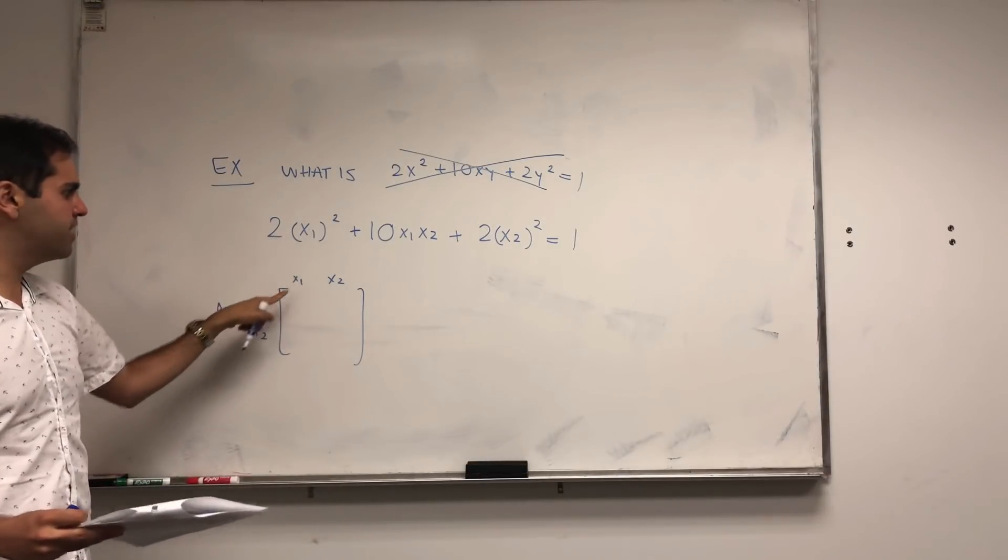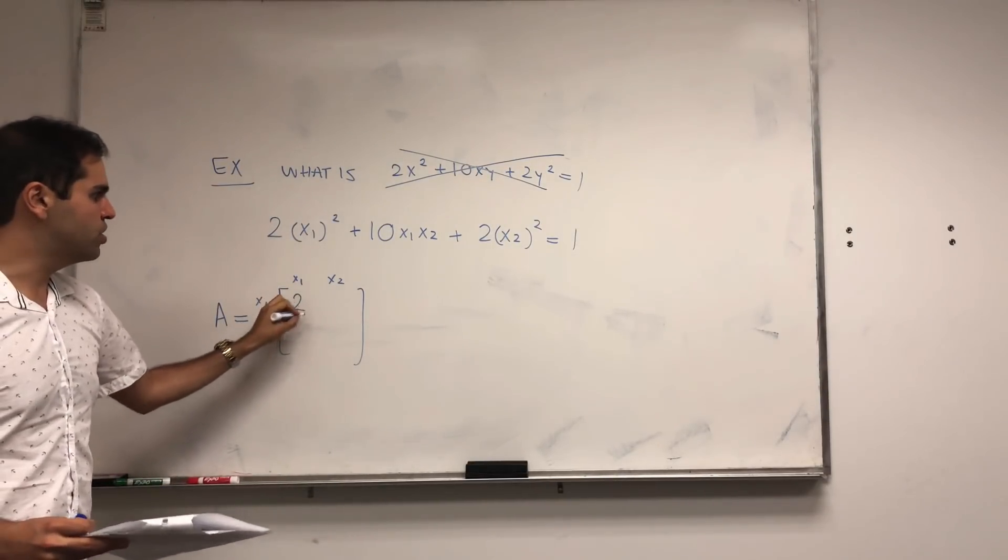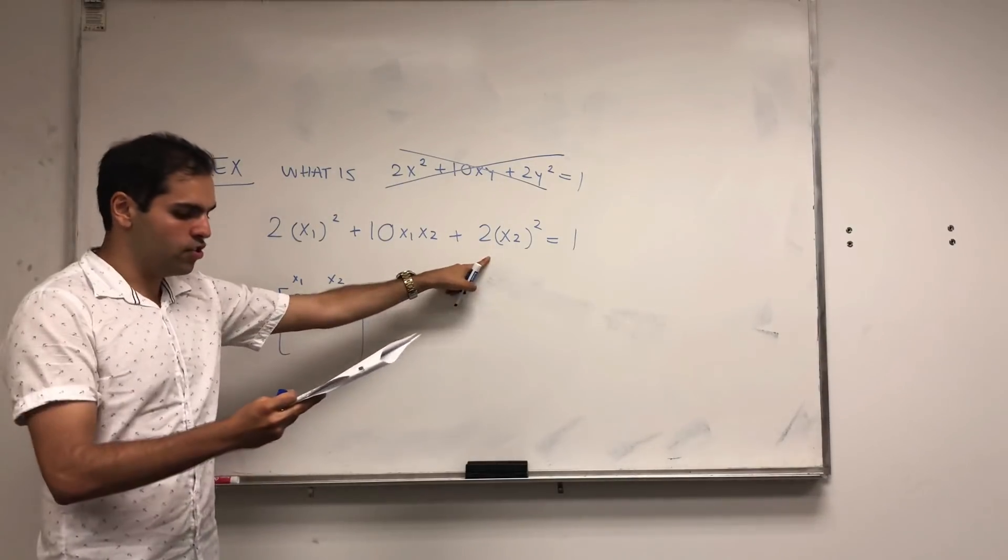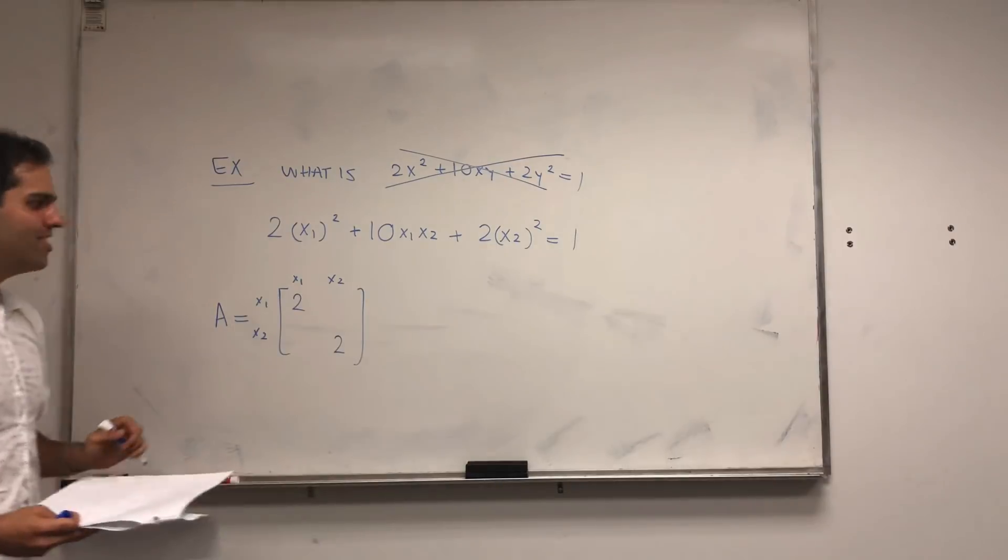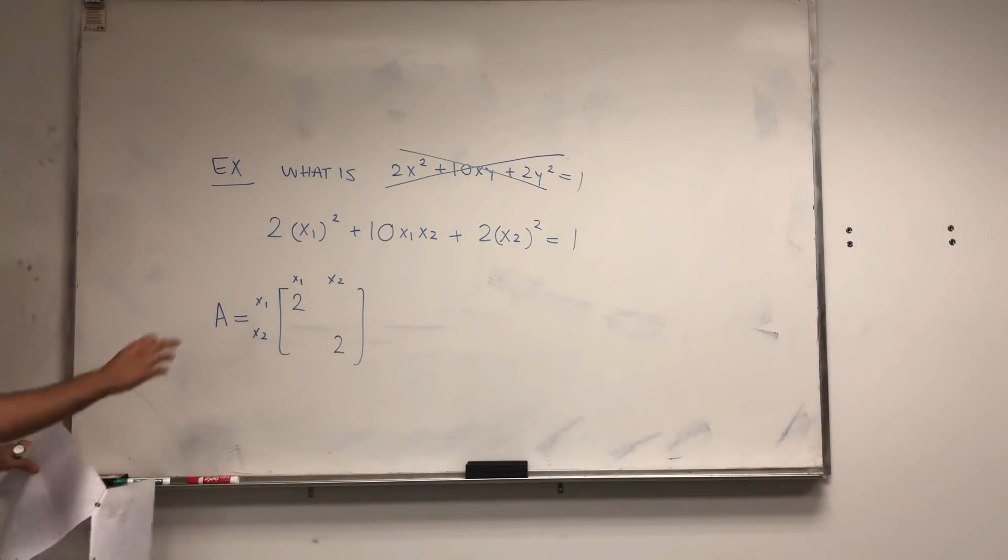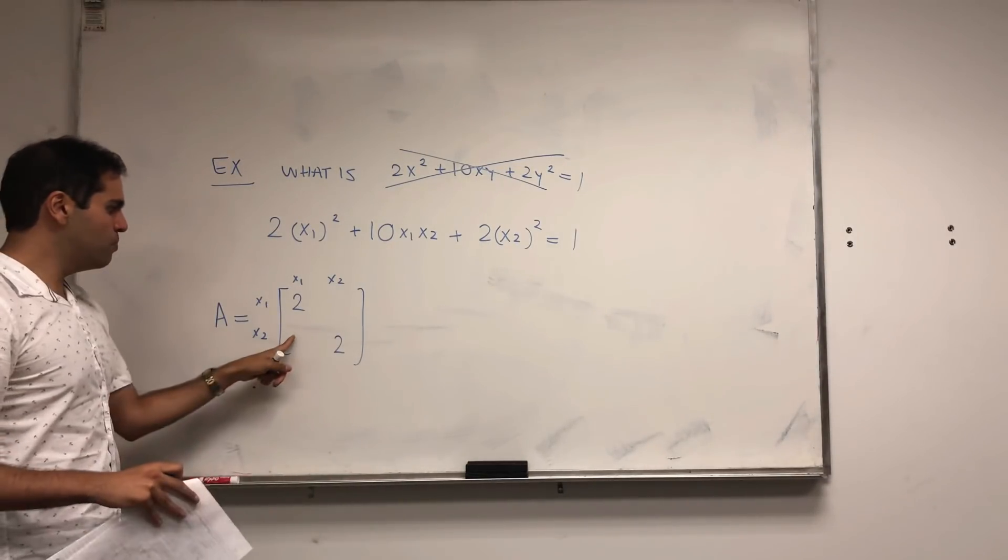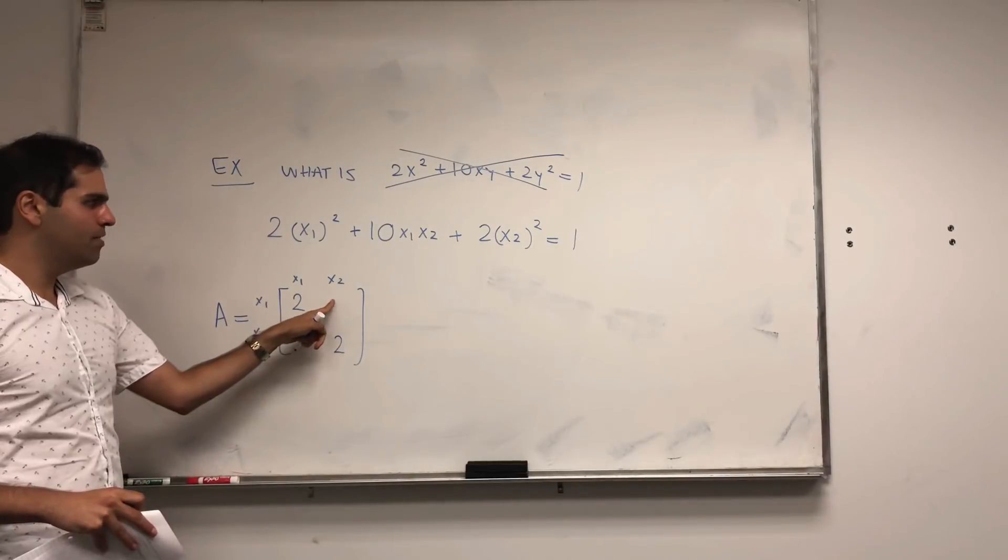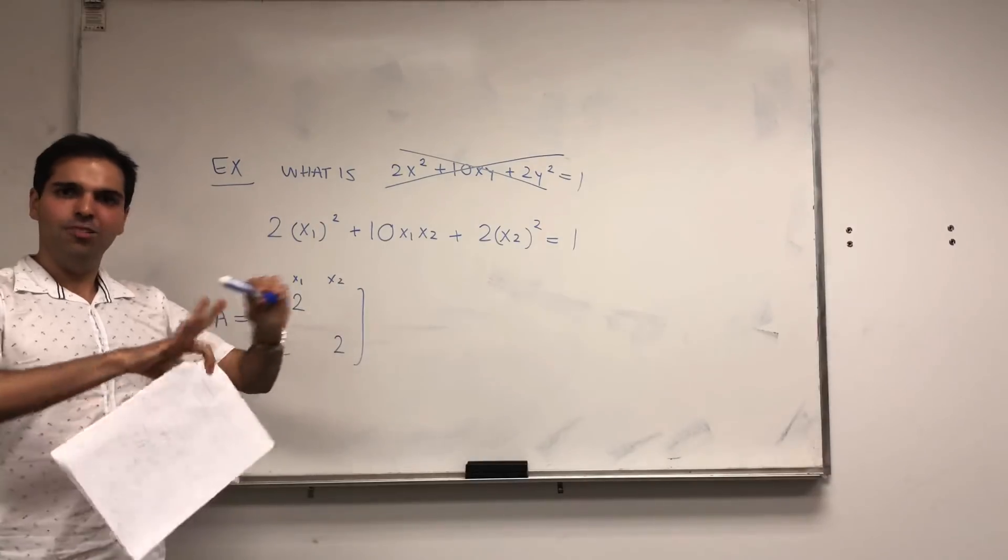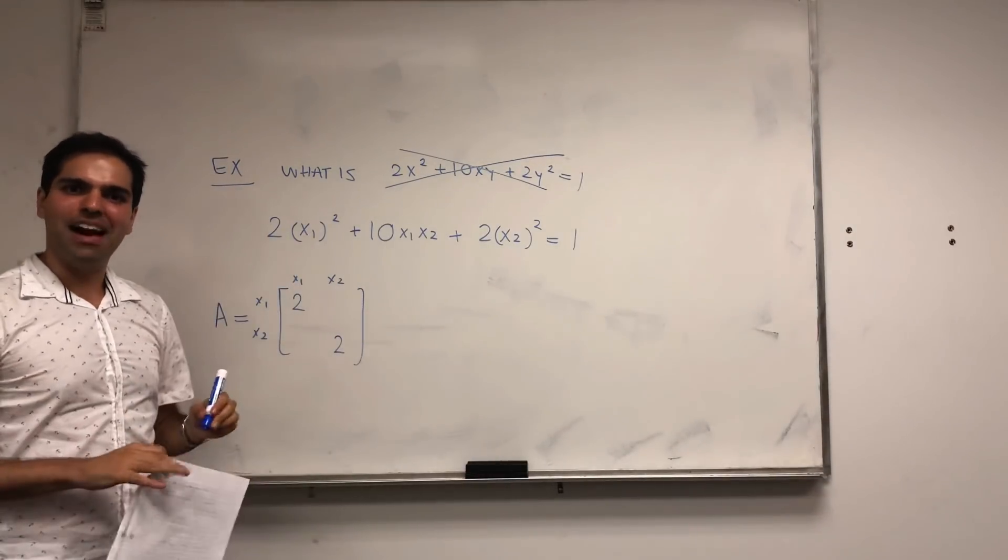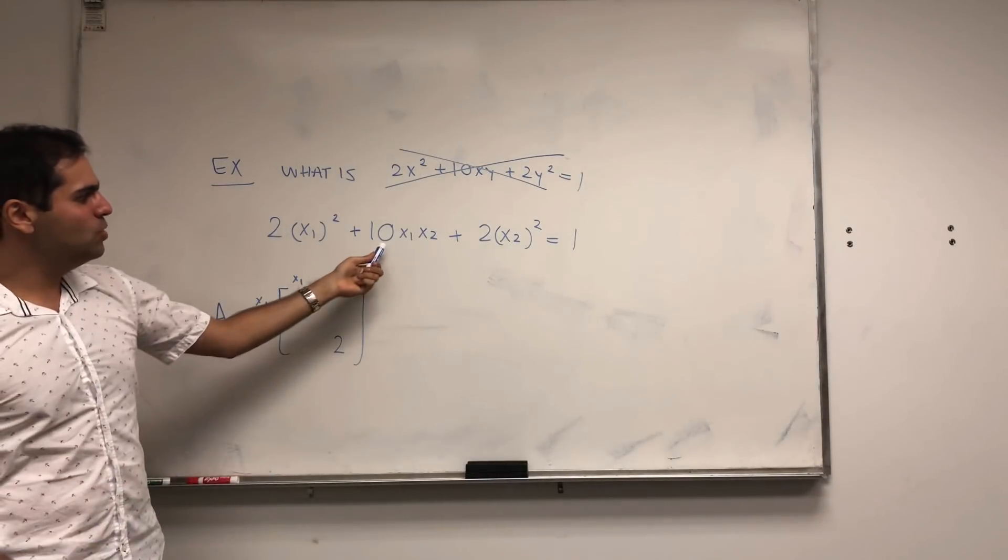And the way you have to read this is X1, X2, X1, X2. So in the first term, you put the X1 squared term, which is 2. In the last term, you put the X2 squared term, which is 2. So, another question is, here you put the X1, X2 term and X2, X1 term, which are the same.